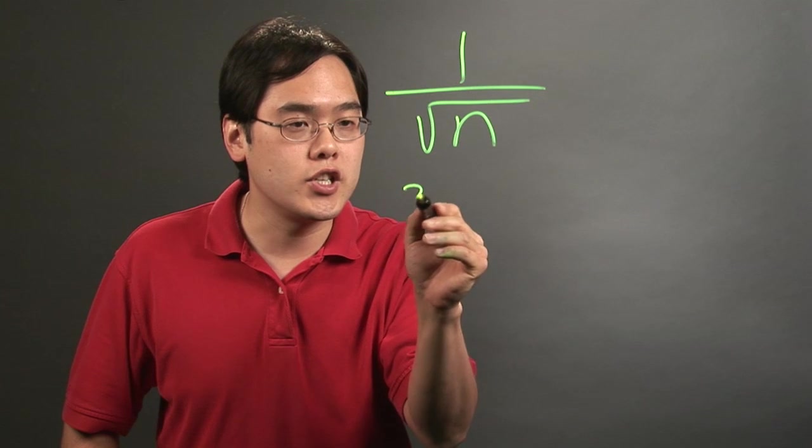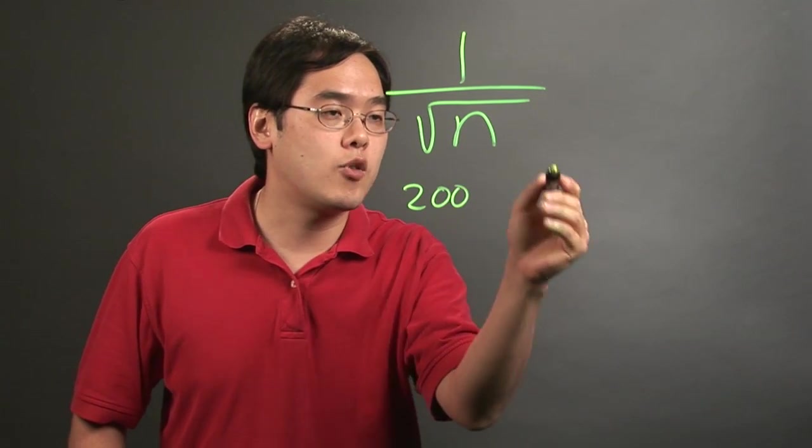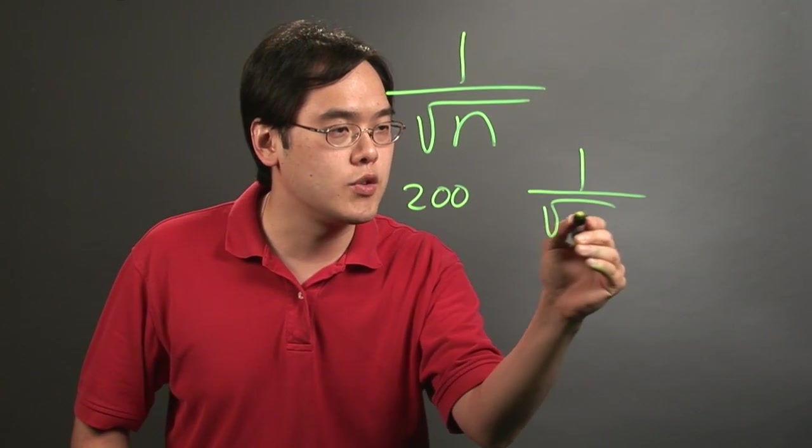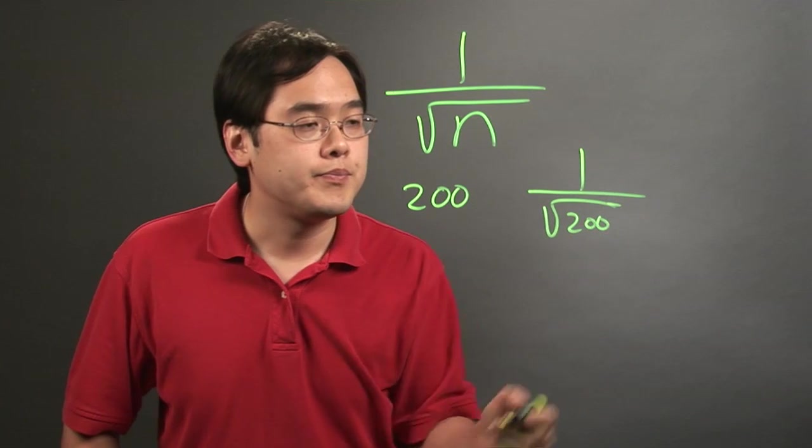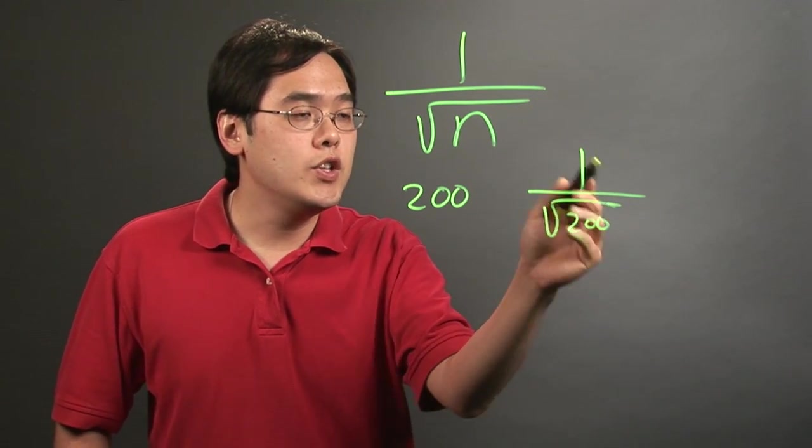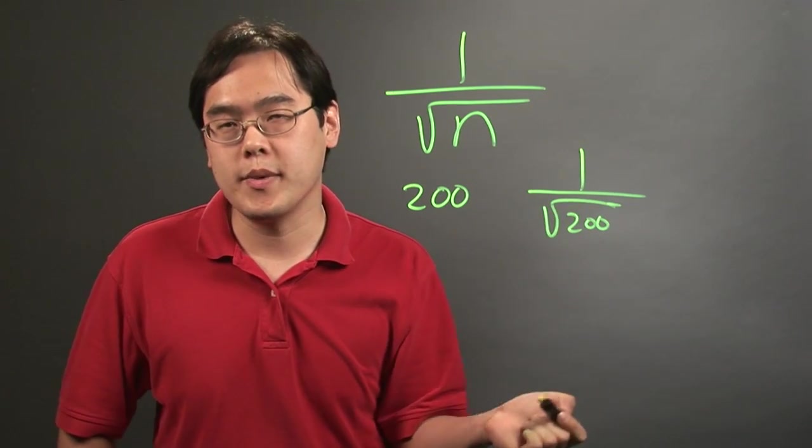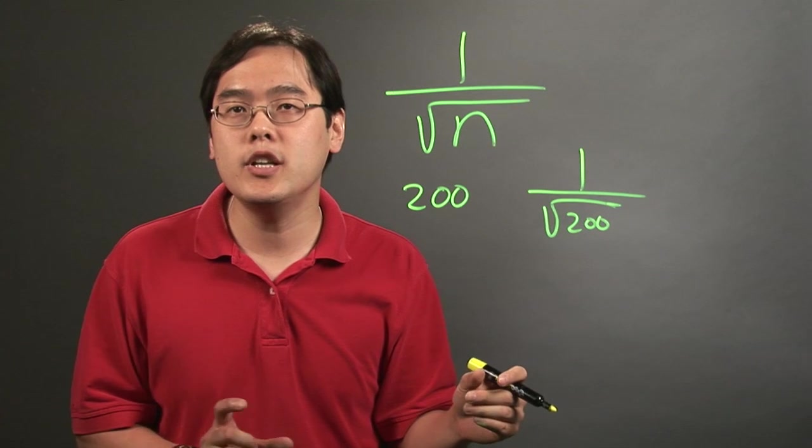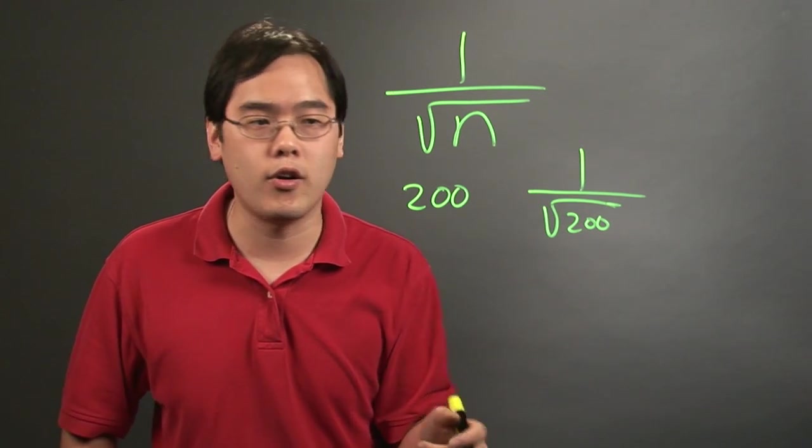Now if you interview let's just say 200 people, for example the formula will be 1 over the square root of 200. Now when you find this particular formula, you'll find that the margin of error is going to be a little bit on the high side.